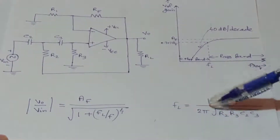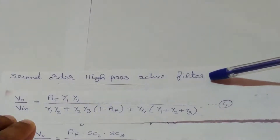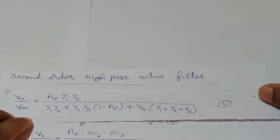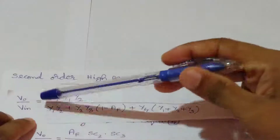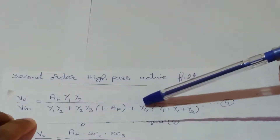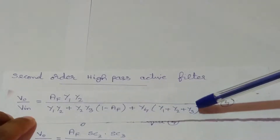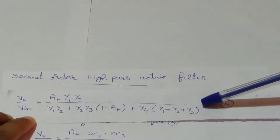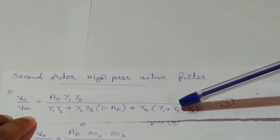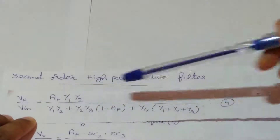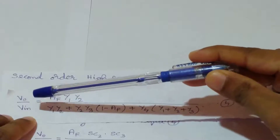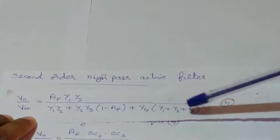Now let's consider the derivation of these equations — the |Vout/Vin| and FL equations for the second-order high-pass Butterworth filter. First, we need this general equation: Vout/Vin = AF·Y1·Y2 divided by (Y1·Y2 + Y2·Y3·(1−AF) + Y4·(Y1+Y2+Y3)). This equation was derived in the video for the second-order low-pass Butterworth filter using a general circuit with admittances Y1 to Y4.